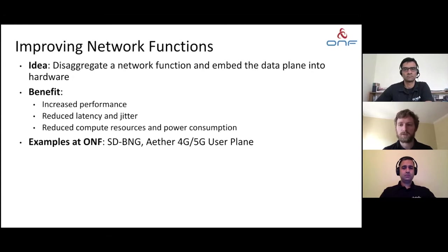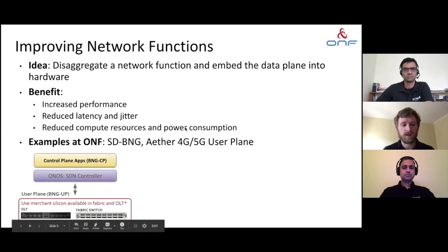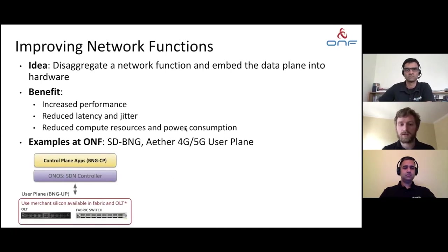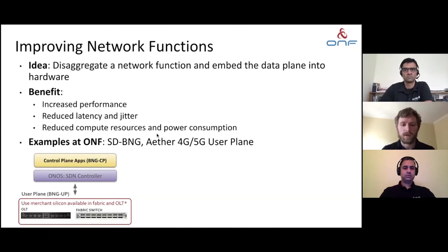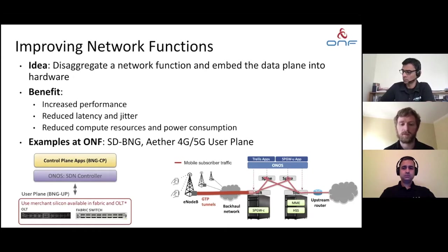At ONF we have a few open source examples of this. The first is SD-BNG, or software-defined BNG, where we've disaggregated the BNG into a control plane application running on ONOS, and we run the user plane on merchant silicon available from the Open Compute Project community. The other example is Aether, where we're taking pieces of the 4G and 5G user plane and embedding them into the fabric so that GTP tunnels can be managed in the data plane, with rules managed at the ONOS layer. User traffic stays on the data plane and only control traffic goes up to the control plane.